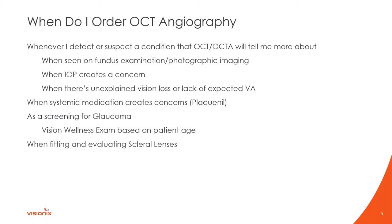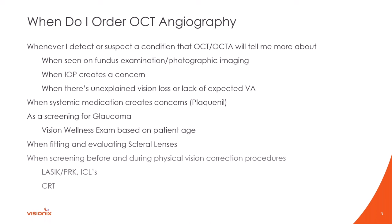I also use the Solix for fitting and evaluating scleral lenses. The new anterior segment capability is really mind-boggling — I can image from the anterior cornea, see the full angle, and even see the back surface of a phakic patient's lens. It's a wonderful teaching tool for patients to show them the loss of clarity of their cataract. When screening before or during refractive correction — LASIK, PRK, intracorneal lenses, or CRT — I'm looking specifically at epithelial thickness for CRT, and corneal thickness for other refractive procedures. The pachymetry map is very helpful for that.